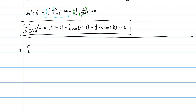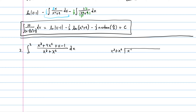The second example is a definite integral: the integral from 1 to 2 of (x cubed plus 4x squared plus x minus 1) over (x cubed plus x squared) dx. The degree of the numerator and denominator are the same, so we first perform long division. Dividing gives a quotient of 1, with remainder 3x squared plus x minus 1.